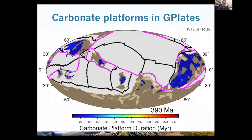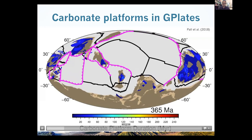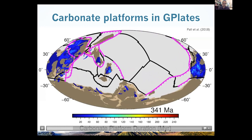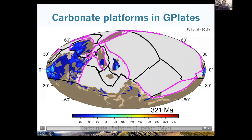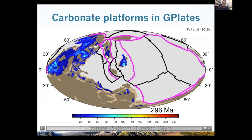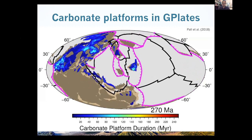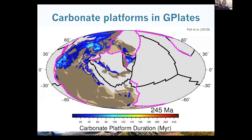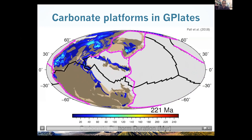In G-plates, this is what we get as output. You see the continents in brown, the plate boundaries, and the subduction zones in pink with the subduction polarities indicated by the teeth. The carbonate platforms are shown in blue. Whenever they're close to the subduction zone in an overriding plate setting, that registers as an interaction. We can then play that forward through time — this shows the assembly of Pangea and the breakup of Pangea.